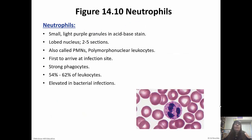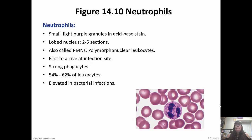Neutrophils have small, light purple granules when stained with an acid-based stain. They have a lobed nucleus with anywhere from two to five sections. They're also called PMNs or polymorphonuclear leukocytes. They're the first responders — they get to the infection site first. They are really strong phagocytes and make up the majority of circulating leukocytes. If we have a bacterial infection, these are going to be elevated. Neutrophils get to the infection site and then call others as necessary by releasing chemicals.